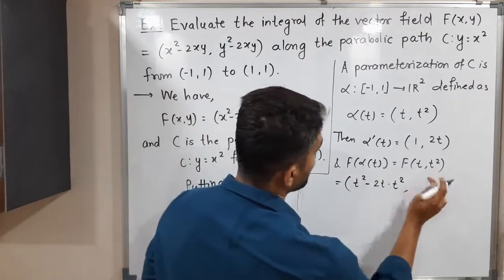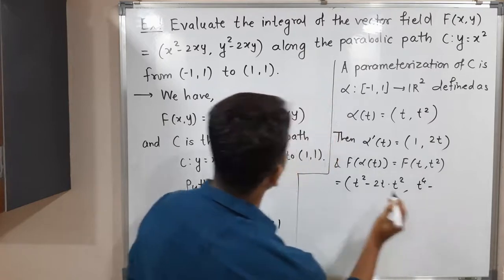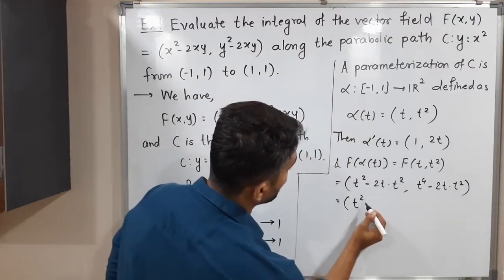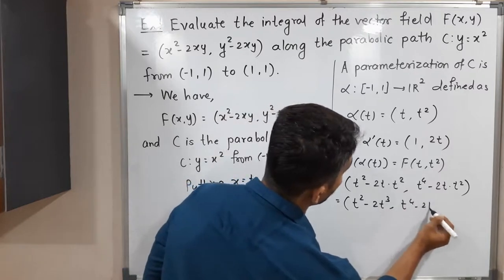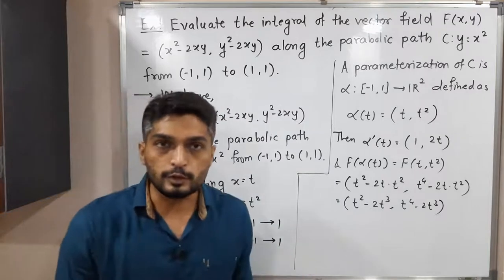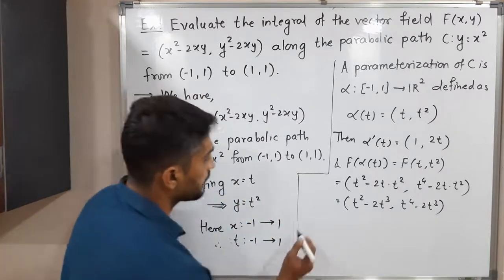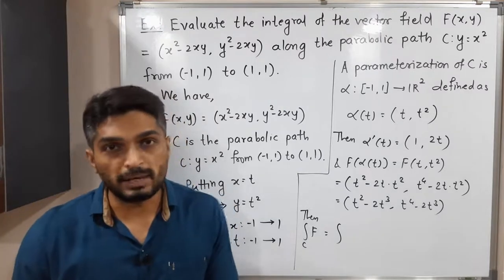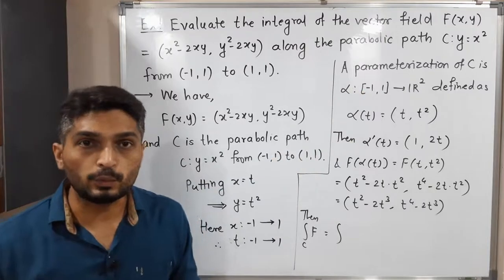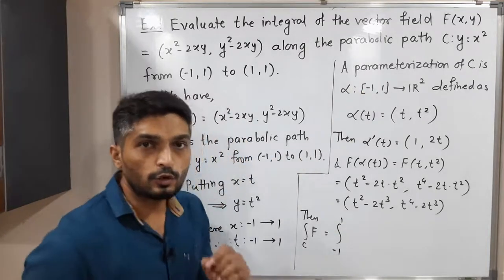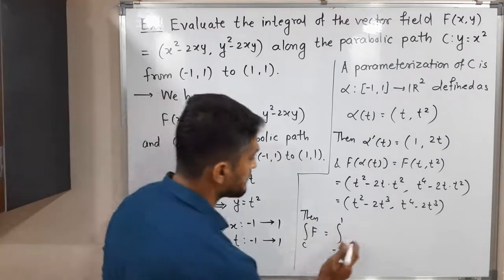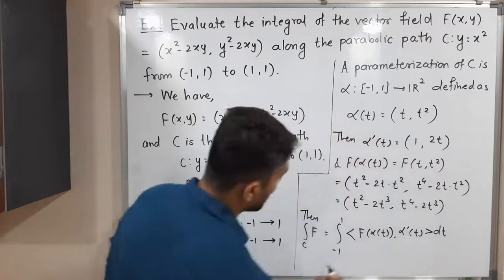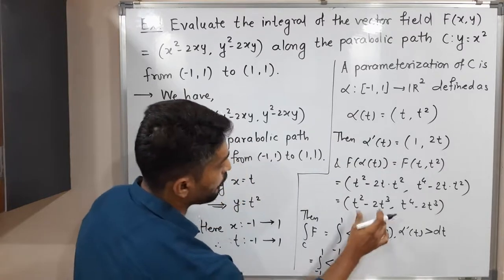Next, the second component: y² - 2xy = (t²)² - 2t·t² = t⁴ - 2t³. So simplifying, we have f(α(t)) = (t² - 2t³, t⁴ - 2t³). Now let us follow the definition of the line integral of a vector field.